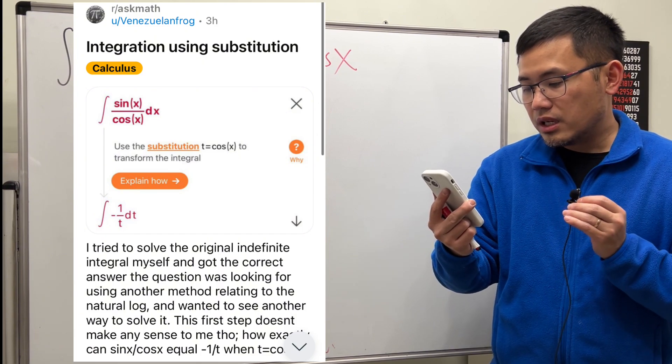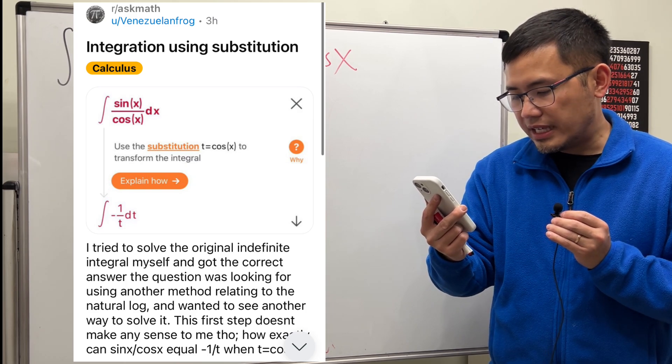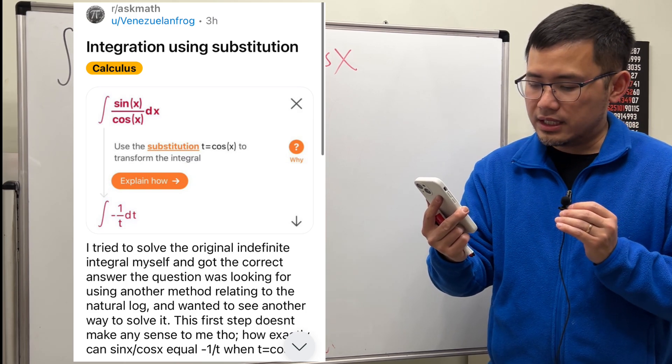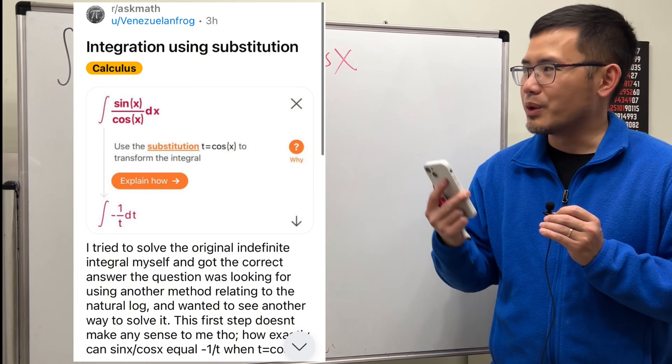And here's the main question. The first step doesn't make any sense to me. How exactly can sin x over cosine x equal negative 1 over t when t is equal to cosine x? Well, let me explain.